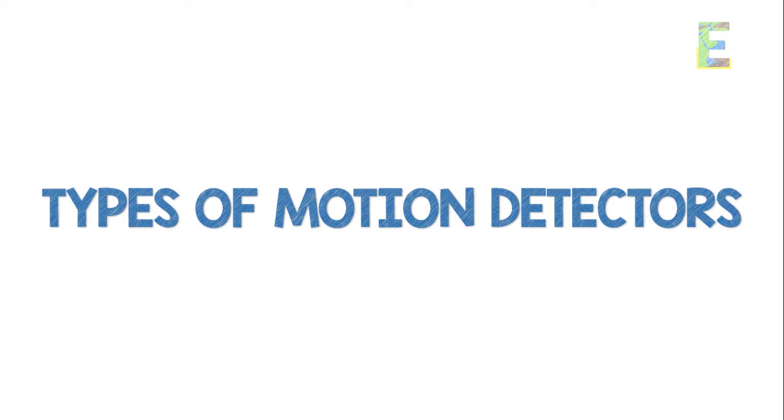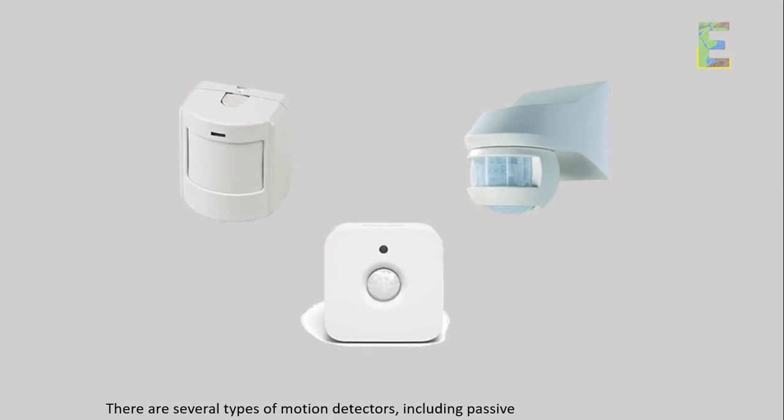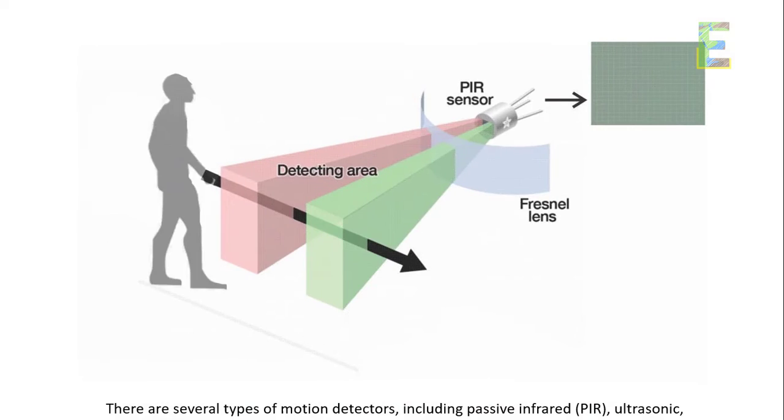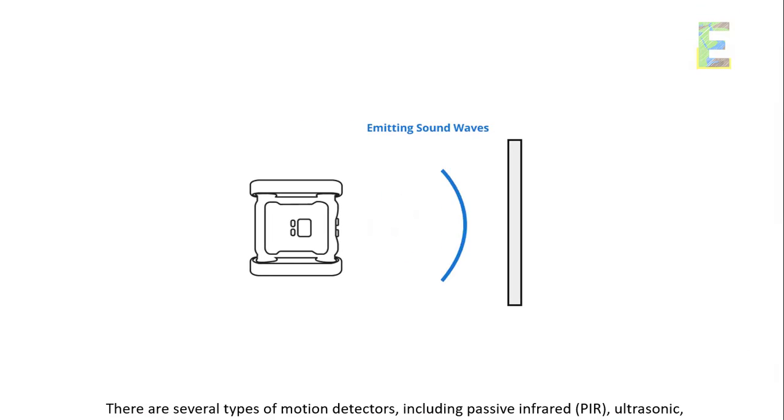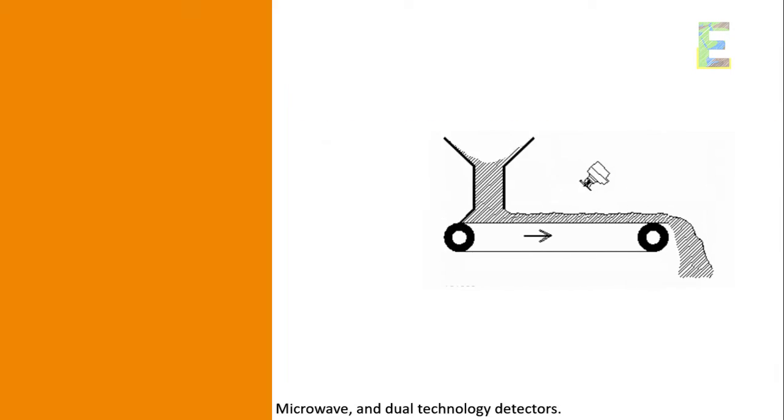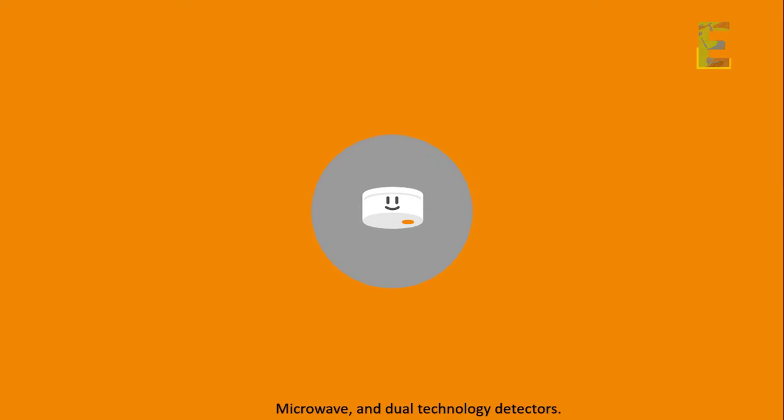Types of motion detectors. There are several types of motion detectors, including passive infrared PIR, ultrasonic, microwave, and dual technology detectors. Each type operates on different principles and is suited for specific applications.